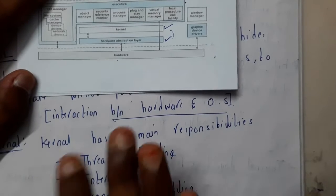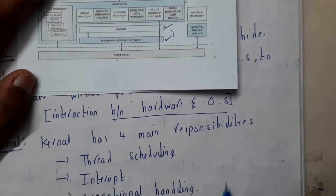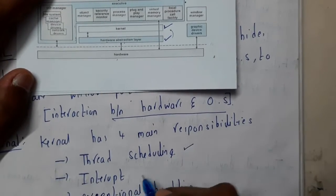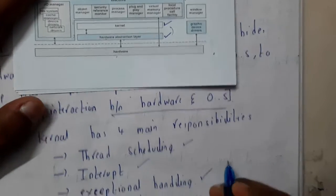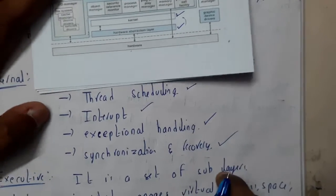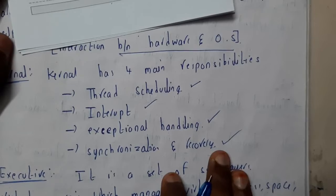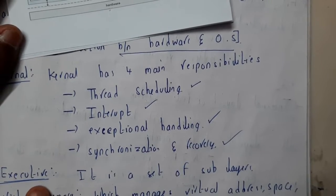Kernel has four important parts: thread scheduling, interrupts, exception handling, and synchronization and recovery. These are the four main operations done by the kernel.